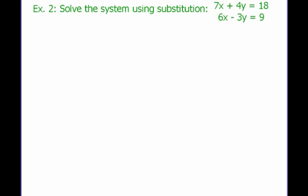Let's do one more example. We solve this system using substitution: 7x plus 4y equals 18, and 6x minus 3y equals 9. I want to solve one of these for one variable, and I'm going to choose to solve the bottom equation for y. The reason is that 6, 3, and 9 are all multiples of 3, so solving this one for y will give me all integer answers, unlike the top equation.